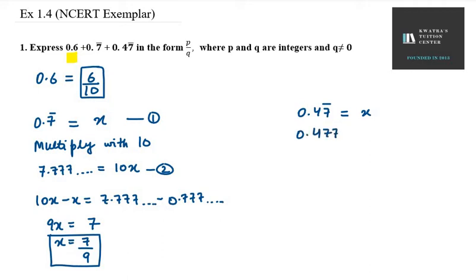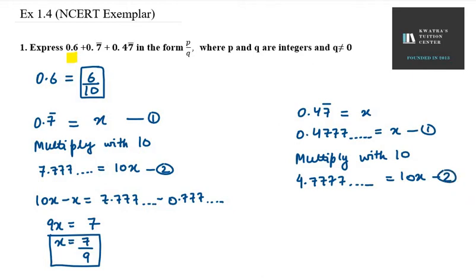Now for the third part, let x = 0.4777... First we will write it in open form: x = 0.4777... Now you have to multiply the equation by 10, so this will be 4.777... = 10x. What you have to do is subtract it, the same method as before. Subtract equation 1 from 2: you will get 10x - x = 4.777... - 0.477...